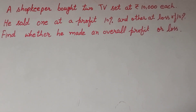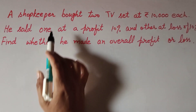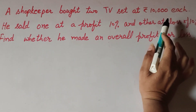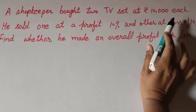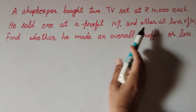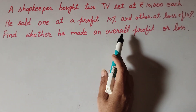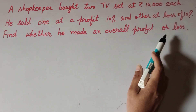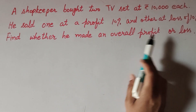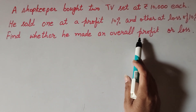Hello friends, welcome to my channel. In this video we discuss: a shopkeeper bought two TV sets at rupees 10,000 each. He sold one at a profit of 10 percent and the other at a loss of 10 percent. We need to find whether he made an overall profit or loss in this transaction.